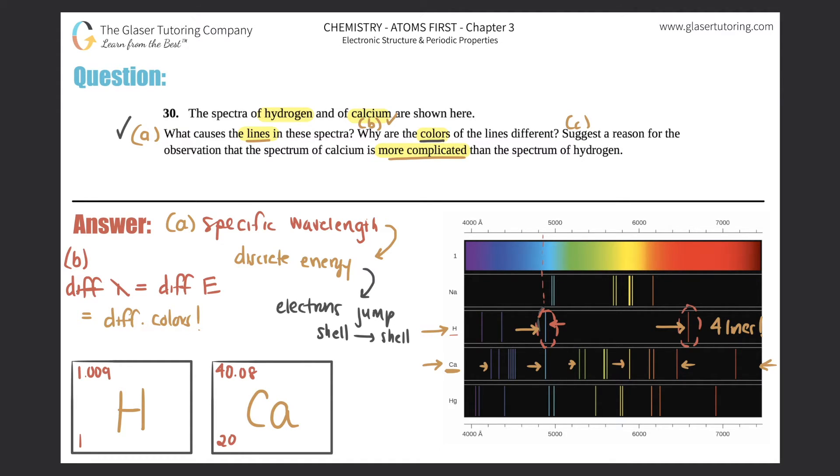Well, it comes from where hydrogen and where calcium is on the periodic table. Hydrogen has an atomic number of one versus calcium has an atomic number of 20. So hydrogen basically has one proton and in its ground state it has one electron. But calcium has 20 protons and also 20 electrons.